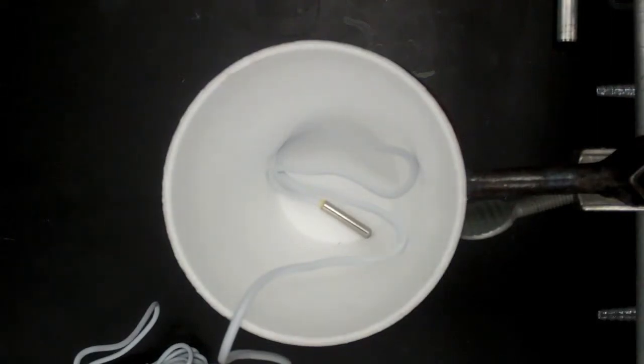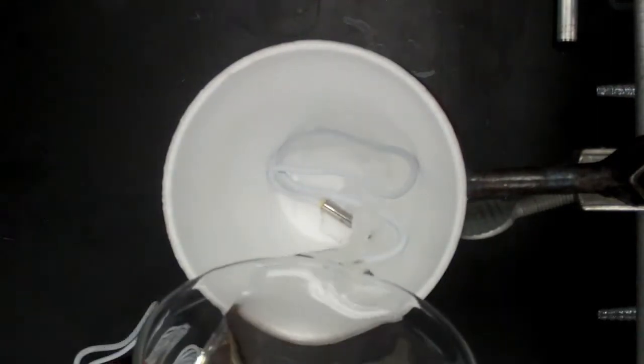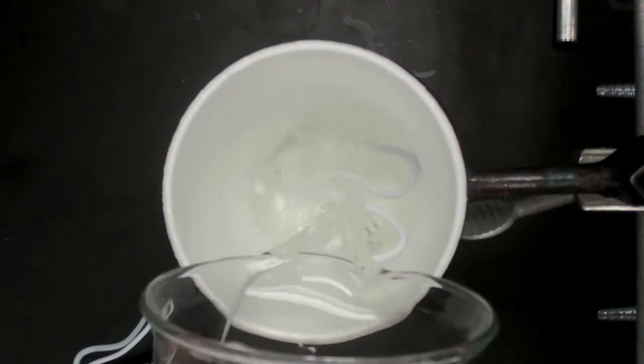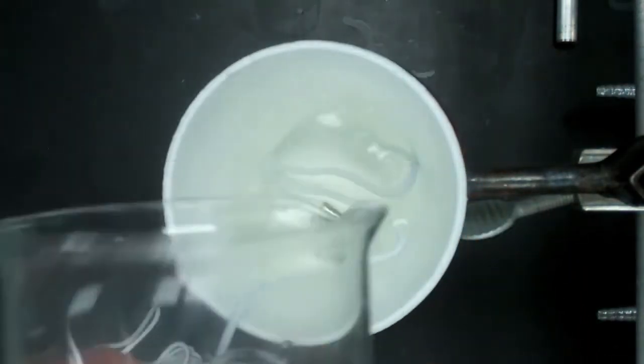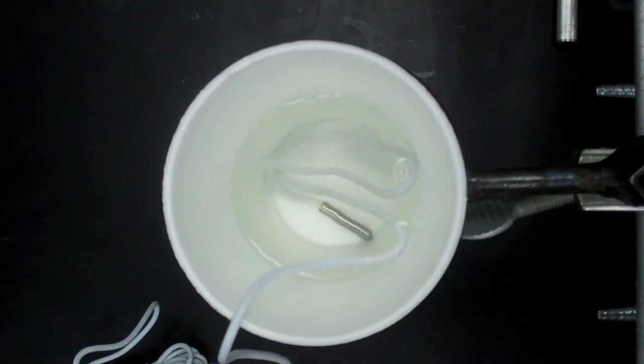Next, we take the water and pour it into two styrofoam cups that are nested into one another. Inside these cups, we have a temperature probe placed, one of the temperature probes from our digital thermometer, and this will measure the temperature of the water.